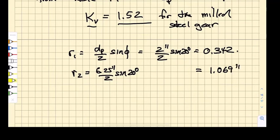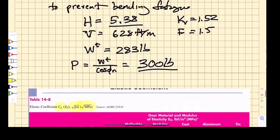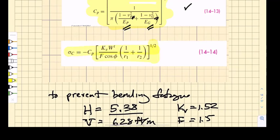So now that we have an elastic contact coefficient, we have R2 radii, we can go back to this contact equation right here, 14.14, and we can input all of our parameters.